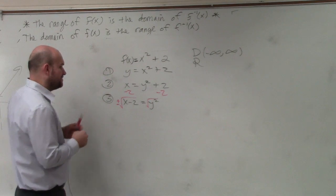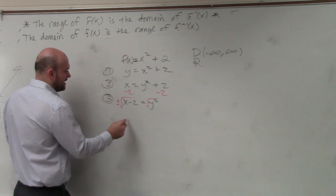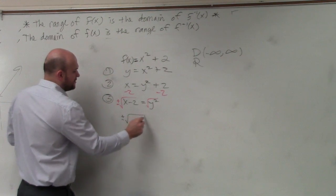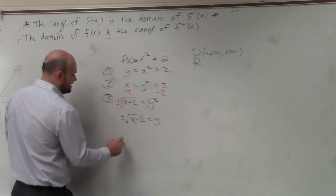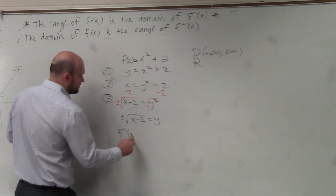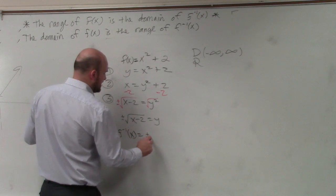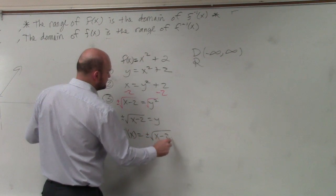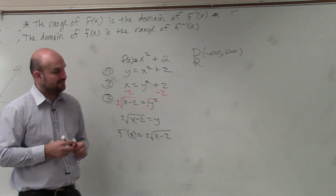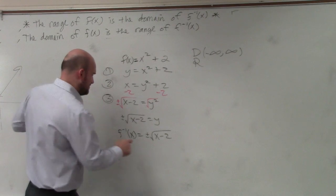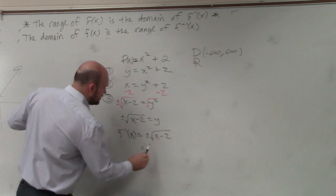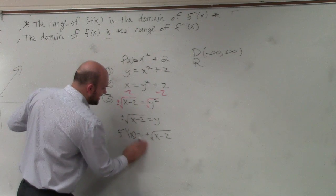That's really, really important because now I have plus or minus the square root of x minus 2 equals y. So what we can say is f inverse equals plus or minus the square root of x minus 2. This is really, really important. We'll talk about this later. But what you guys can see is there's basically two of them. We have two functions. We have the positive and we have the negative.